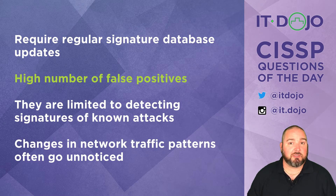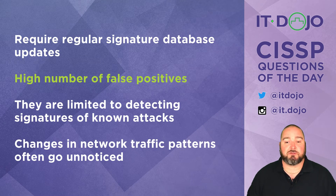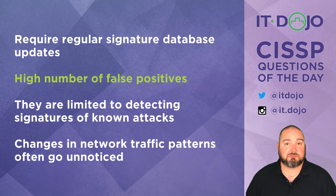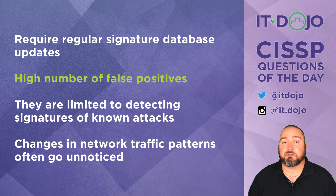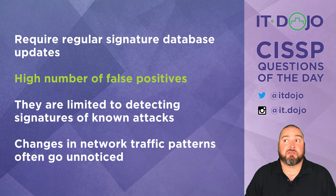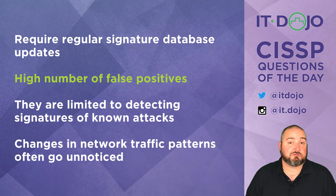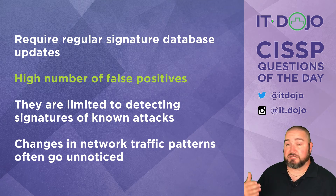For example, say you have a node that doesn't normally generate a lot of SSH traffic, and then suddenly the person using that computer joins a project requiring them to do a bunch of secure data transmissions using SSH. Now they're generating a lot of SSH traffic — a change in network conditions — and the anomaly-based system fires off an event saying why is this node suddenly sending so much encrypted traffic? That's a false positive; there's actually nothing wrong. Because networks do change in terms of data flow, anomaly-based systems are more prone to false positives than knowledge-based systems.